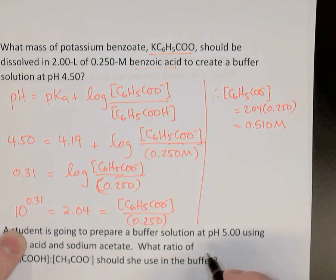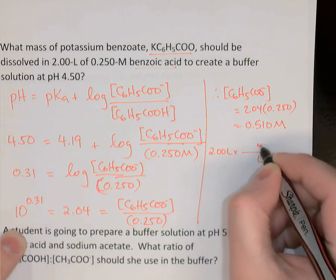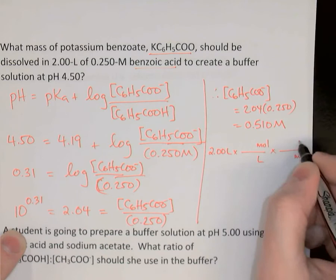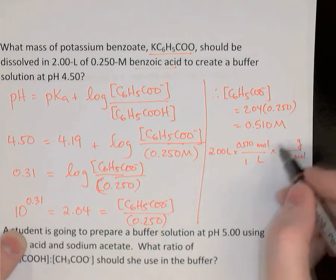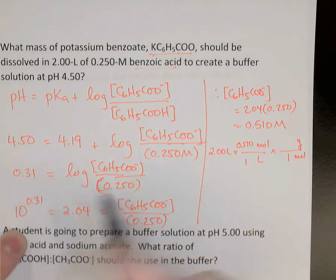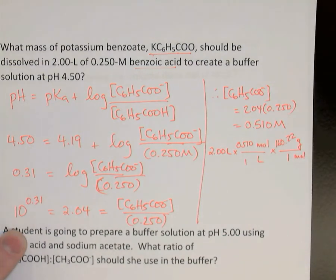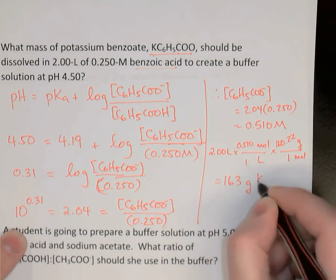Now we find the mass of salt needed. We need 2 liters × 0.510 mol/L = 1.020 moles of potassium benzoate. The molar mass of potassium benzoate: K (39.1) + 7 carbons + 2 oxygens + 5 hydrogens = 160.22 g/mol. So mass = 2 × 0.510 × 160.22 = 163 grams.